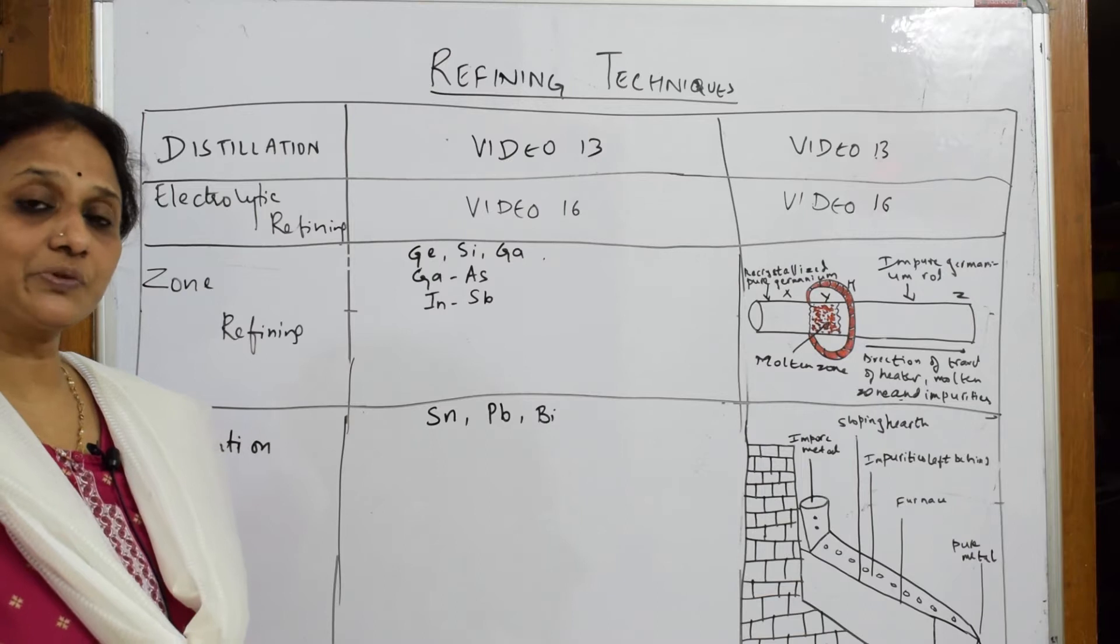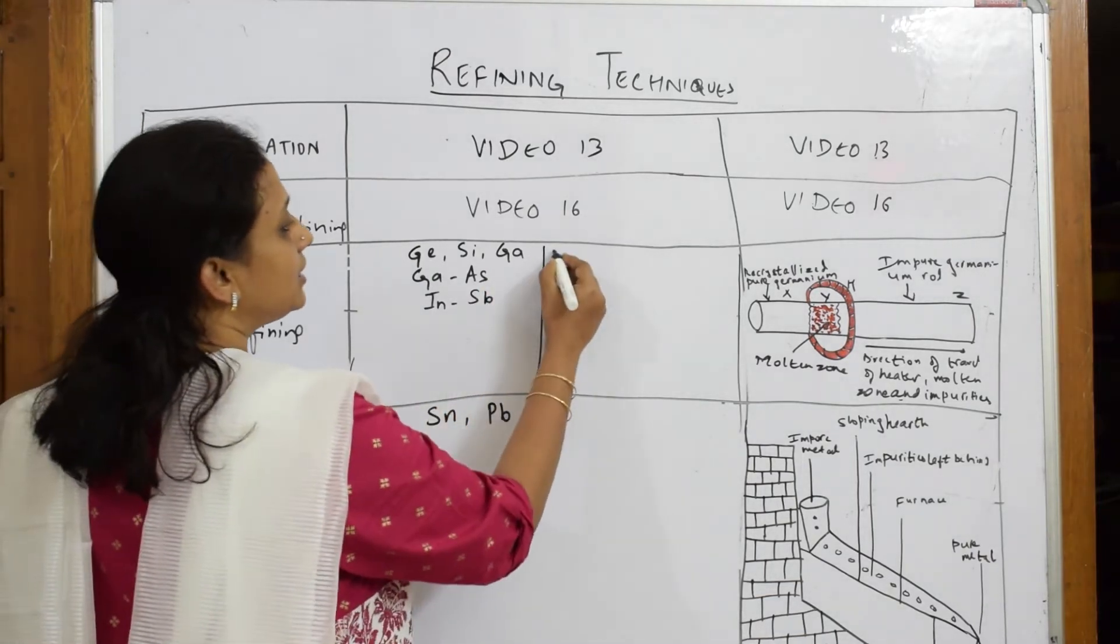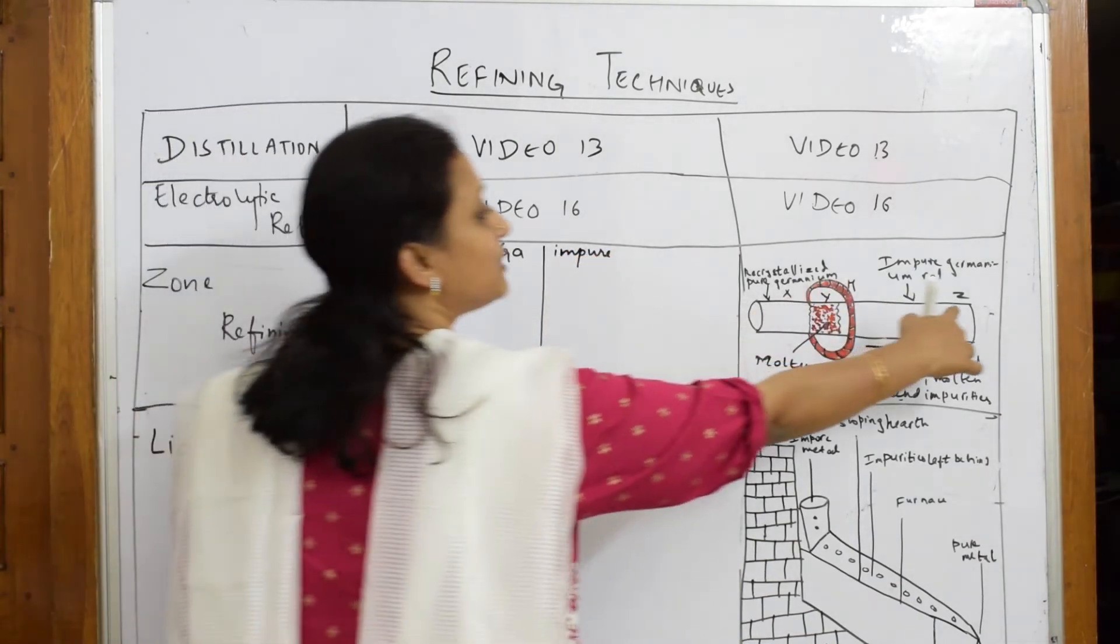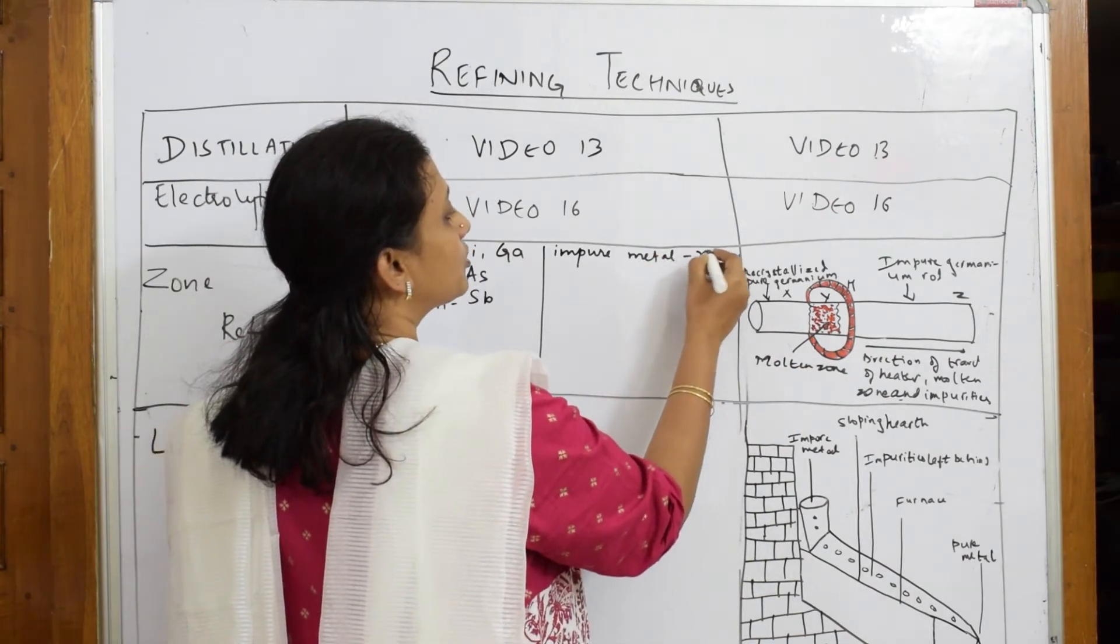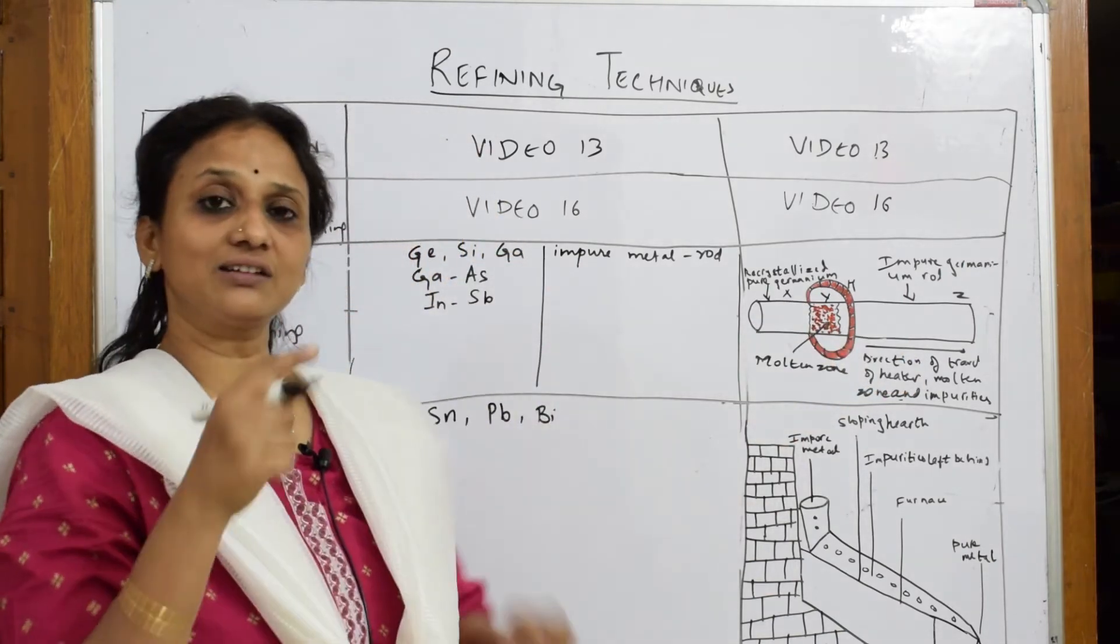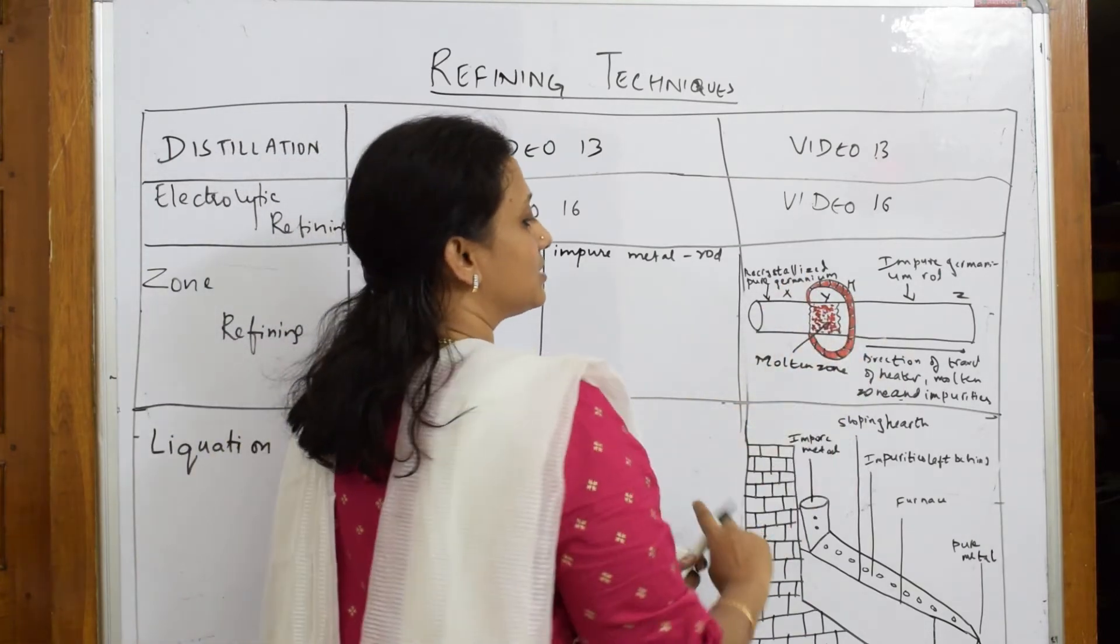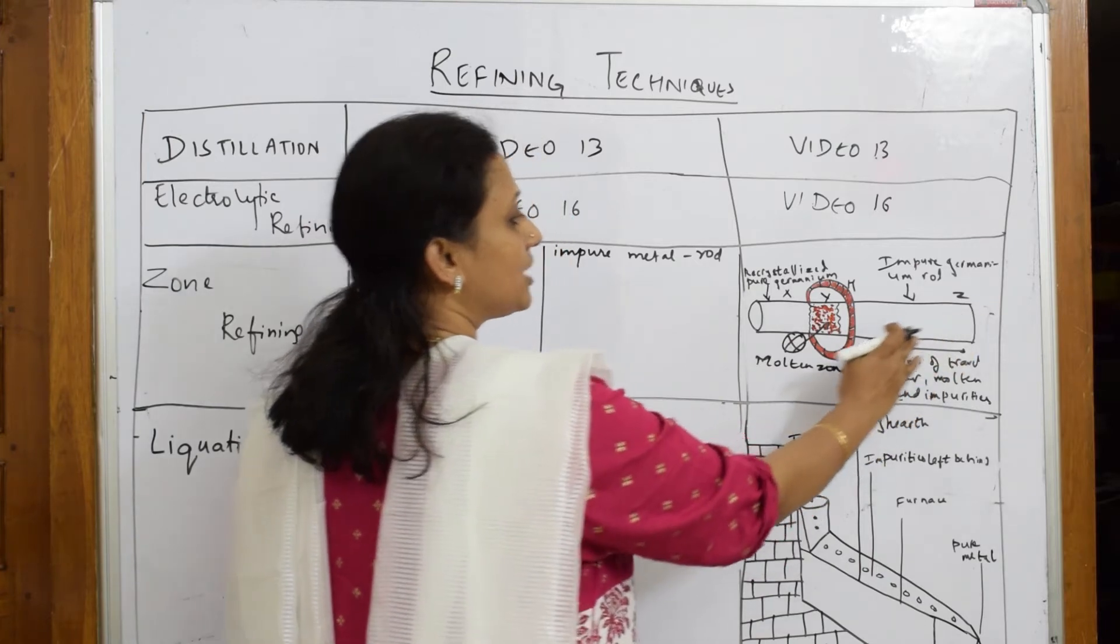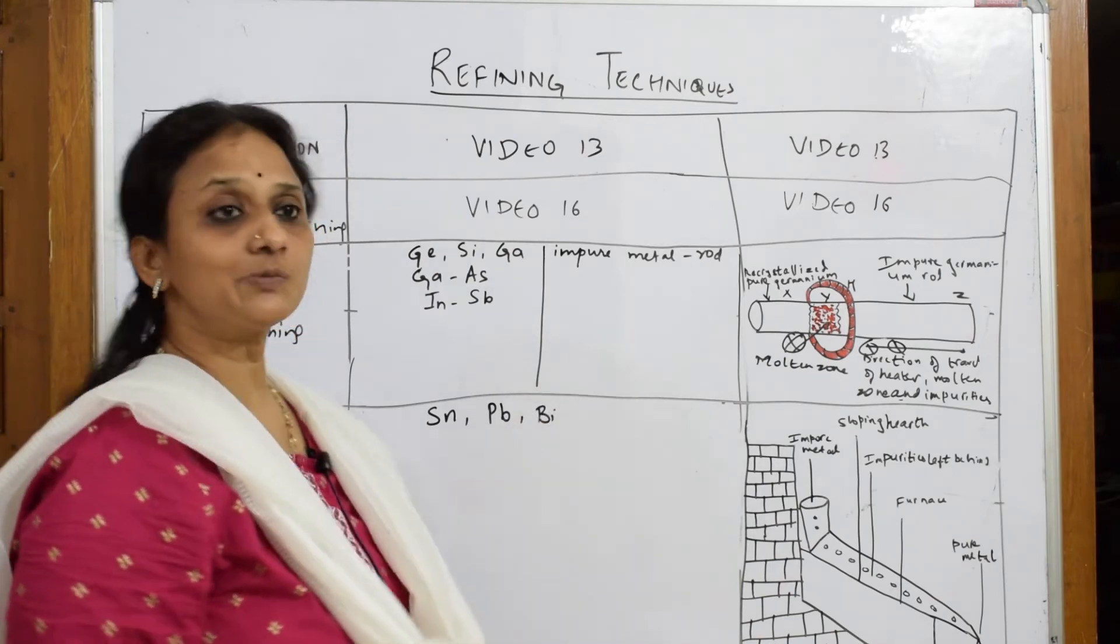What is the principle which we're going to follow in zone refining? First, the impure metal is made in the form of a rod. Second, around the rod you have circular electrical heaters which keep rotating. Below this you have rollers and this rod keeps rotating. The circular coil keeps on heating the rod.